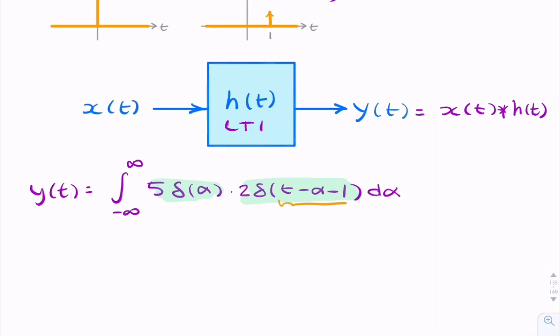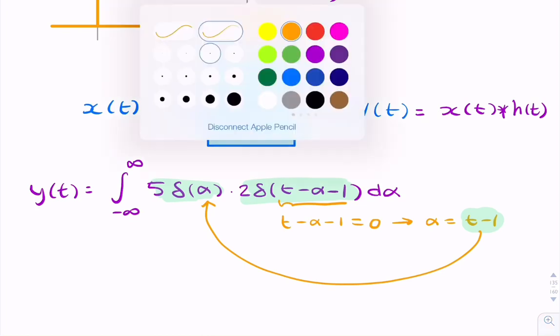So I will say t minus alpha minus 1 equals 0, so that gives you alpha equals t minus 1. And I will take that value of alpha, and I will put it in there. And then we no longer need the integration.